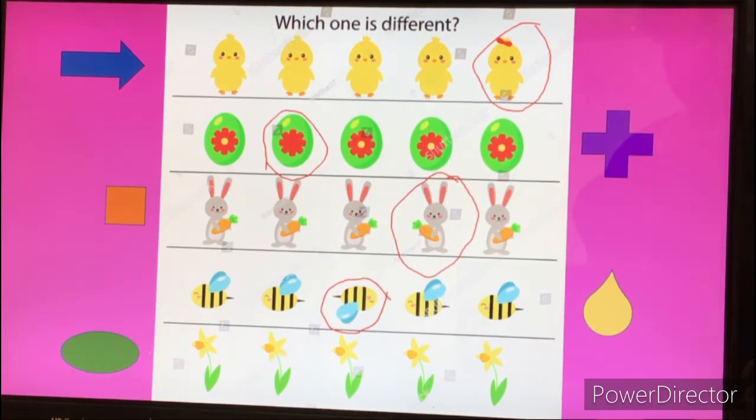Let's move down to the last shape, the green oval. Look at these yellow flowers. Which one is not the same? We have to look very carefully. Whoa, this one's very tricky friends.